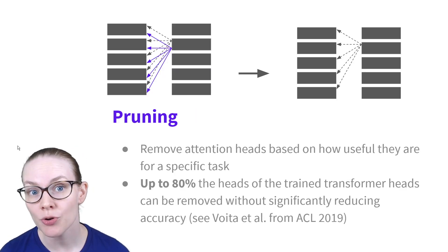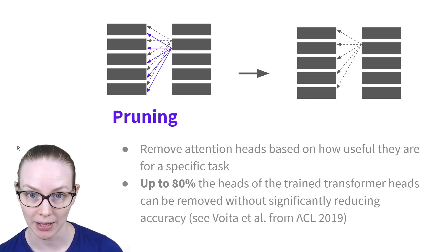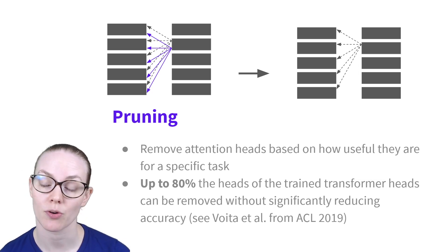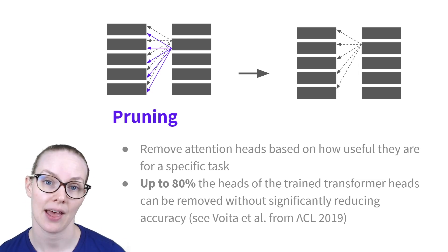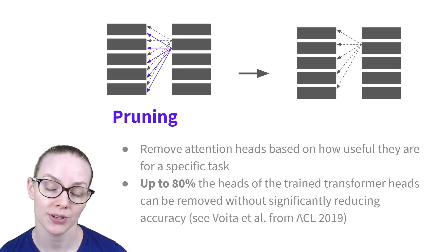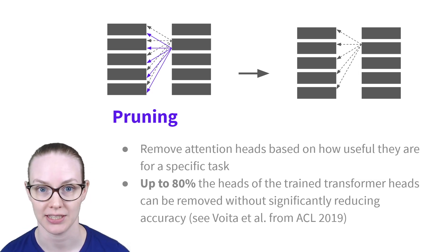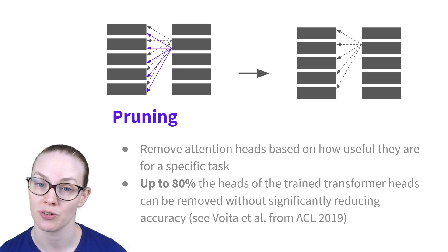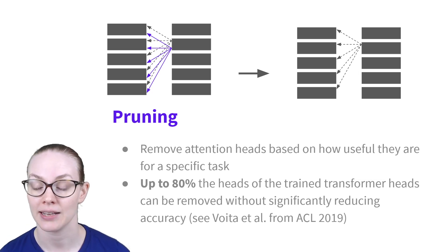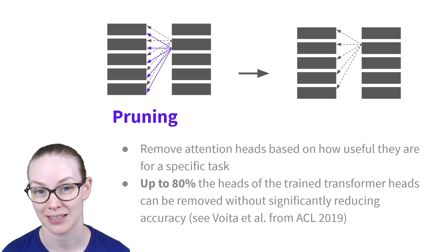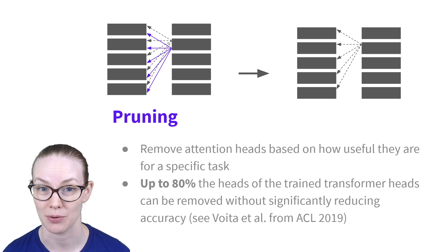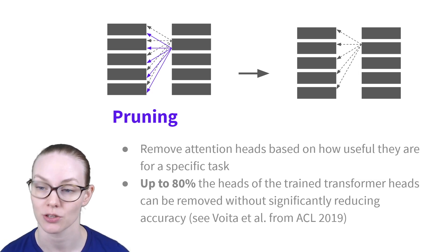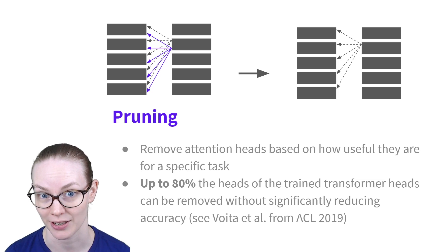Pruning is removing trained weights from the model. For transformers, usually you will pick some sort of measure of importance and then a threshold, and any heads that do not meet or exceed the threshold will be removed from the trained model. Some research has shown that up to 80% of the heads of a trained transformer can be removed without dramatically changing performance, so this can be a great space-saving alternative.